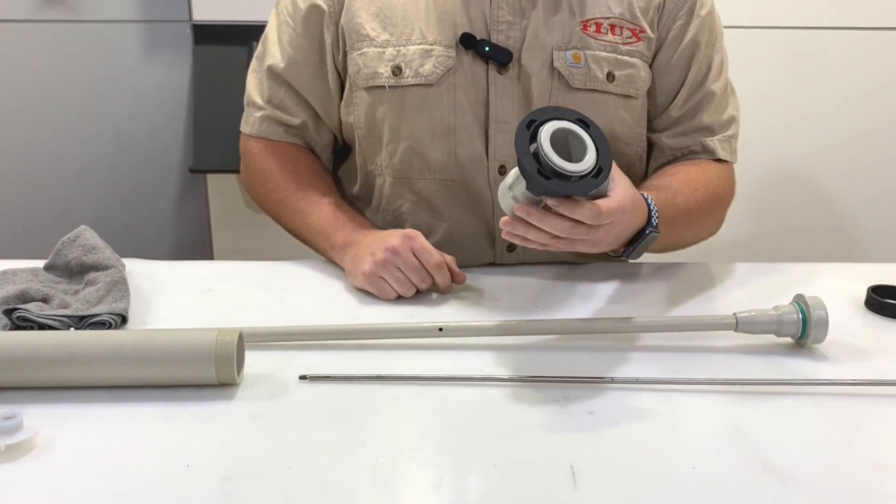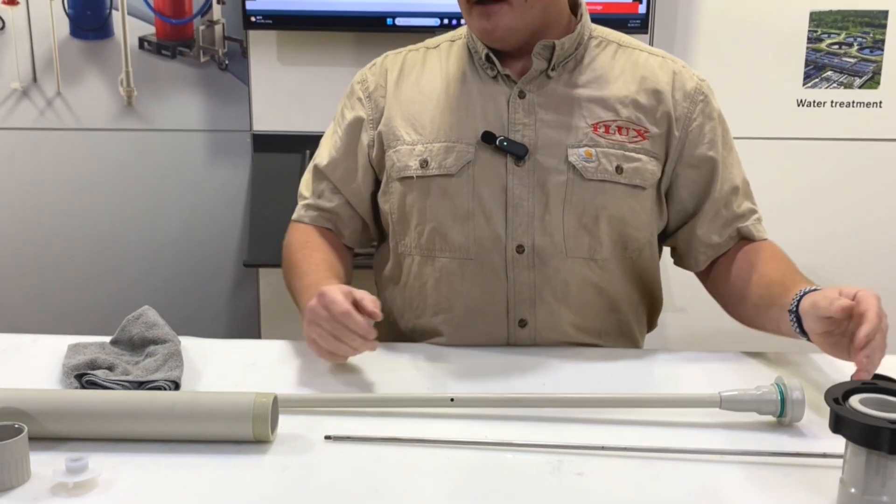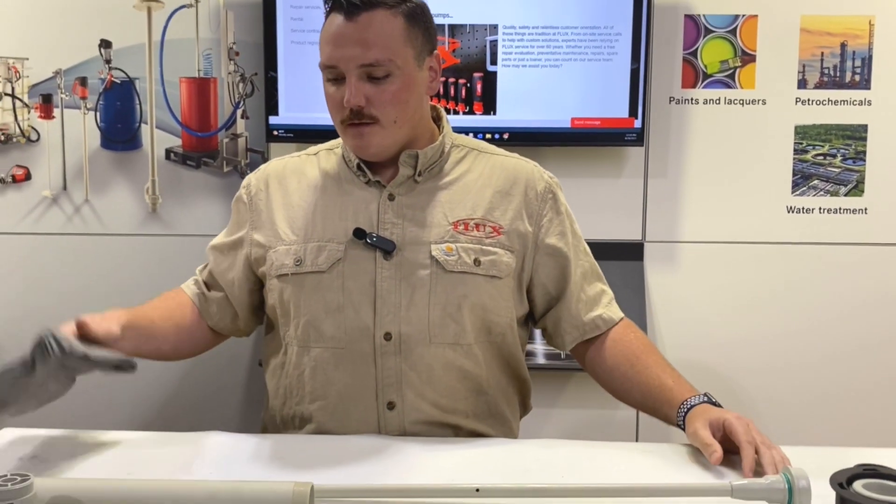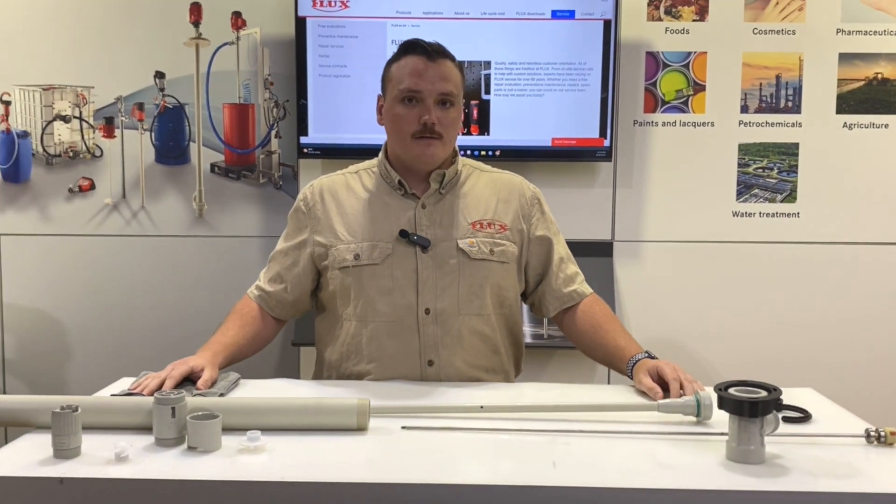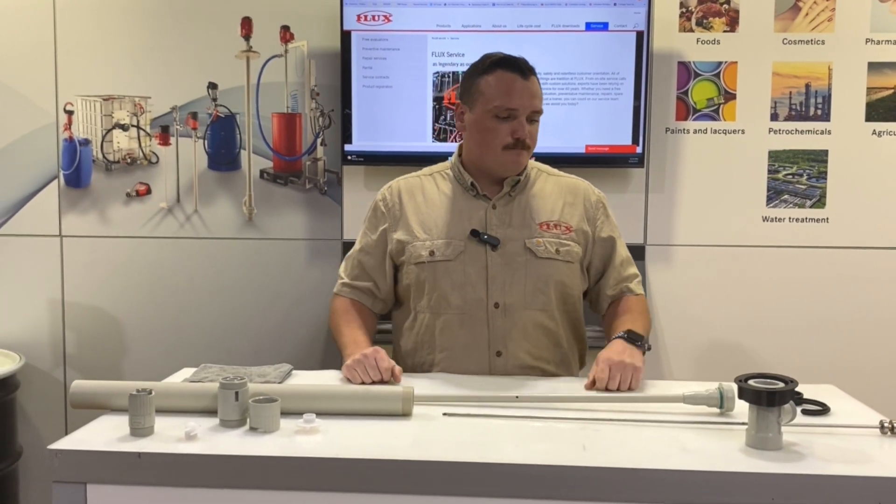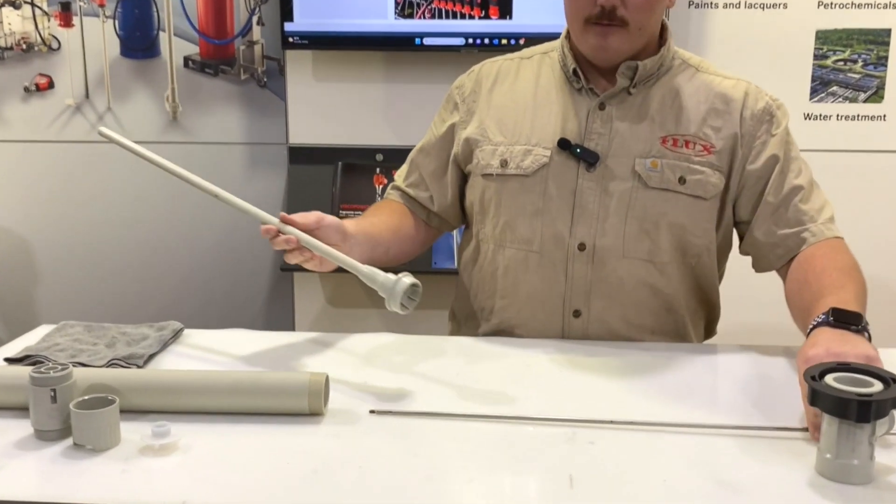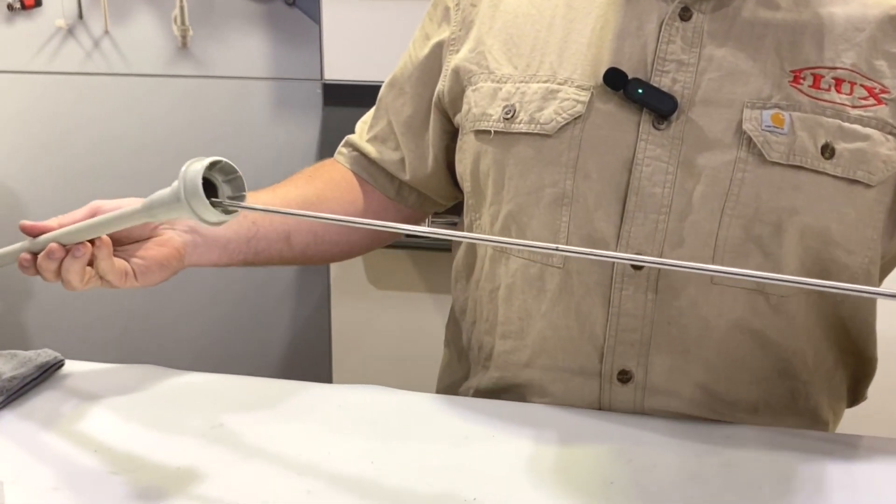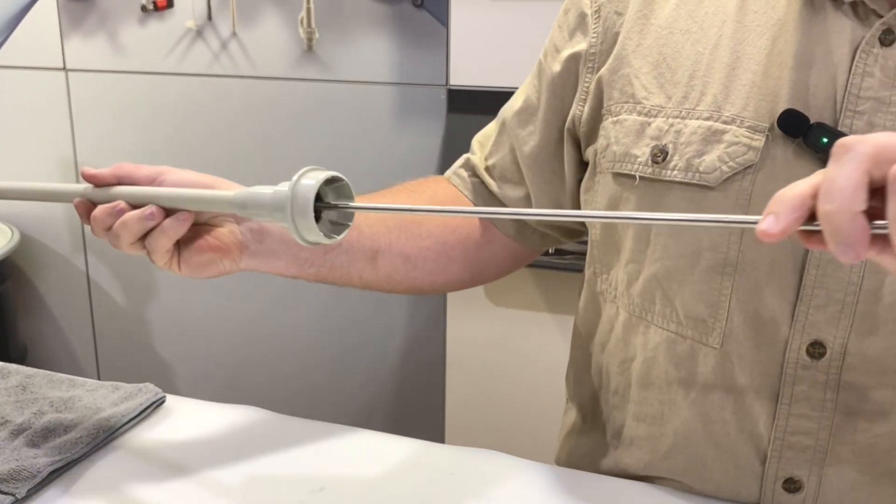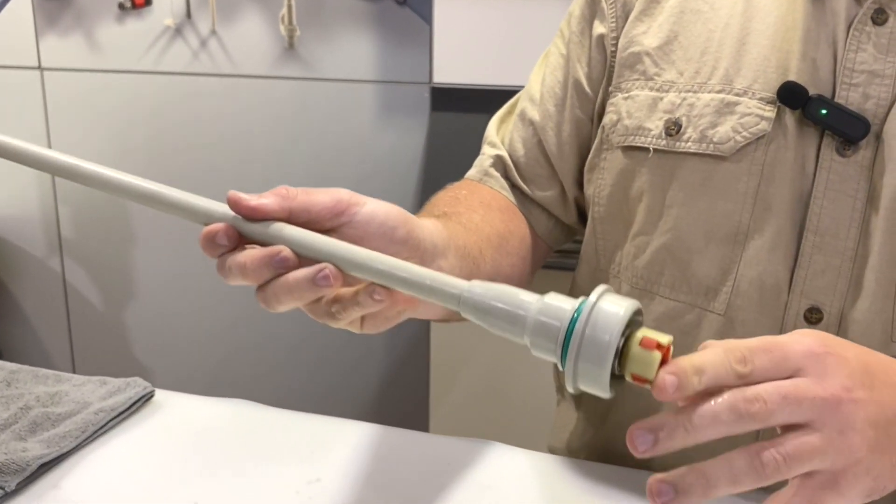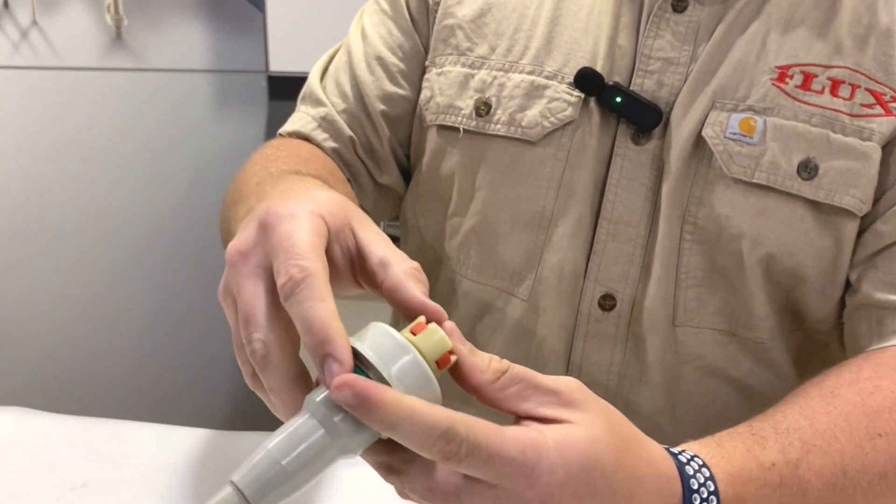And then that's all of the components that you would need to replace. So we'll put everything back together, starting by inserting the shaft back into the inner tube, and then just press down firmly to seat the bearings down inside. Reinstall the T piece.